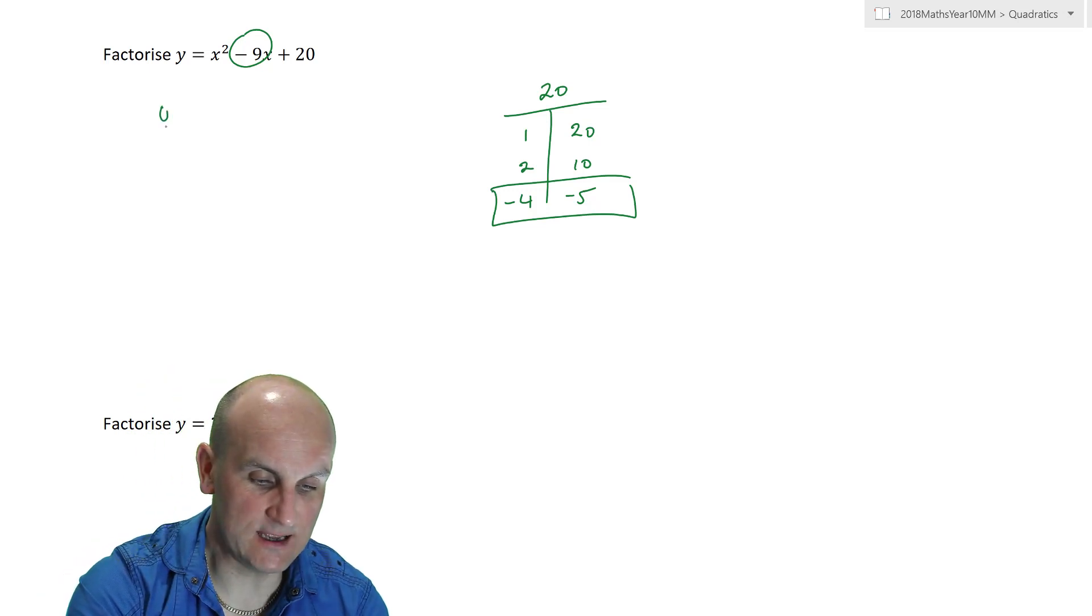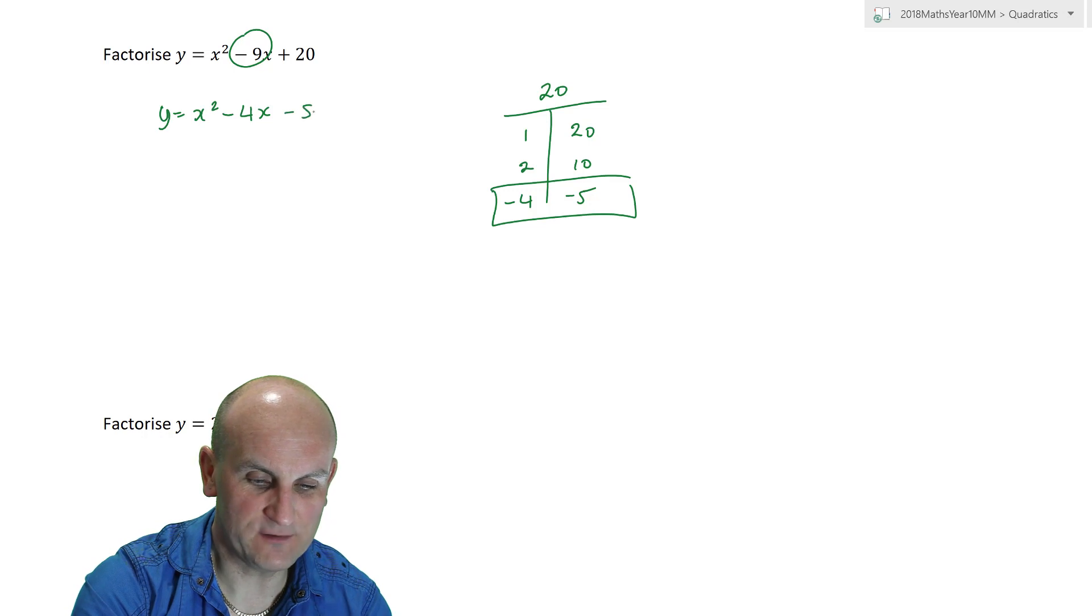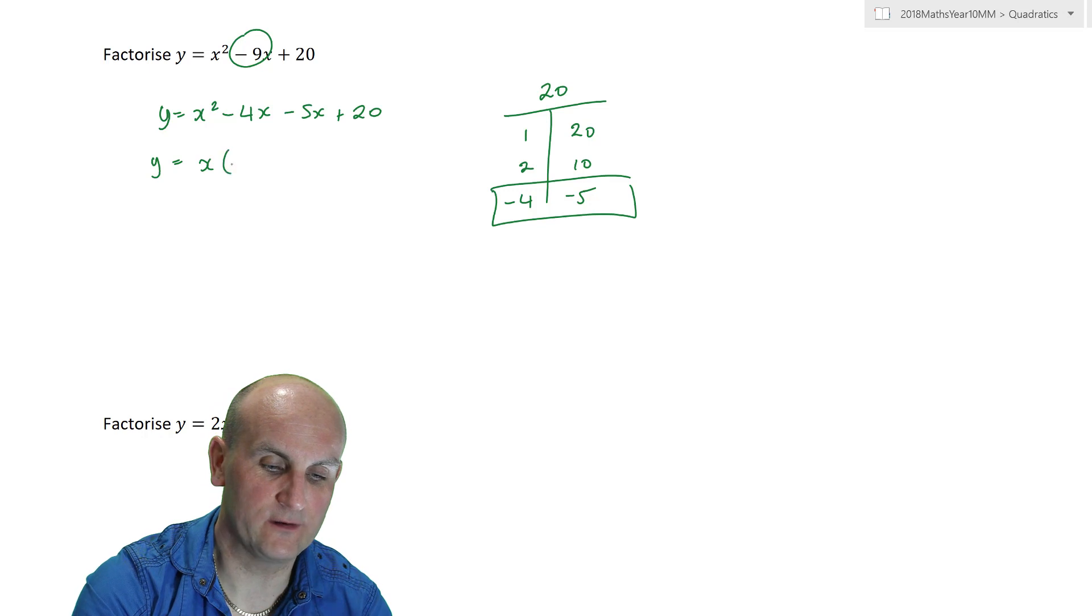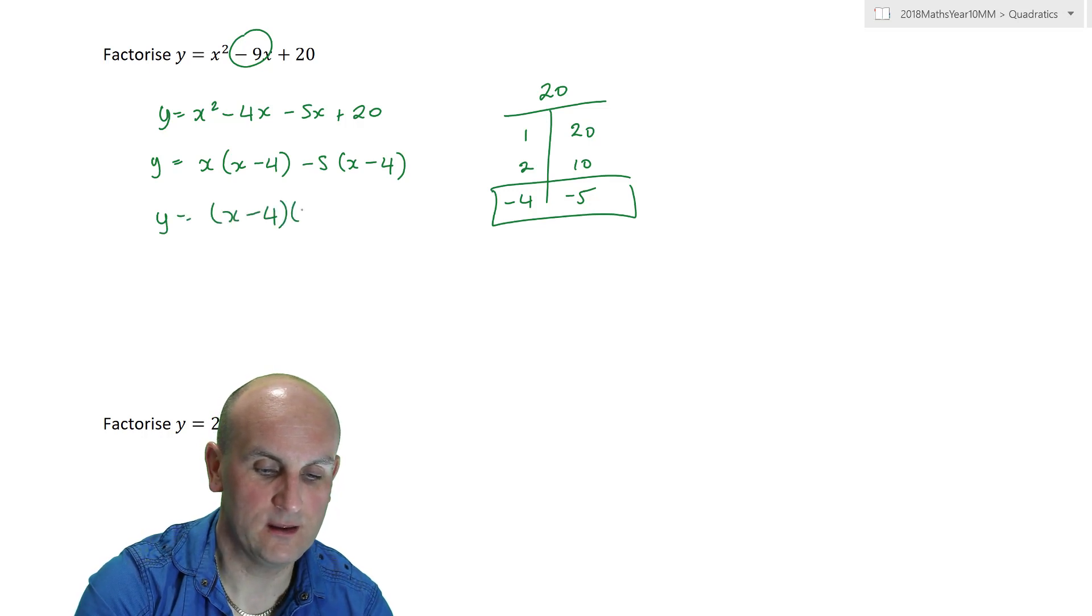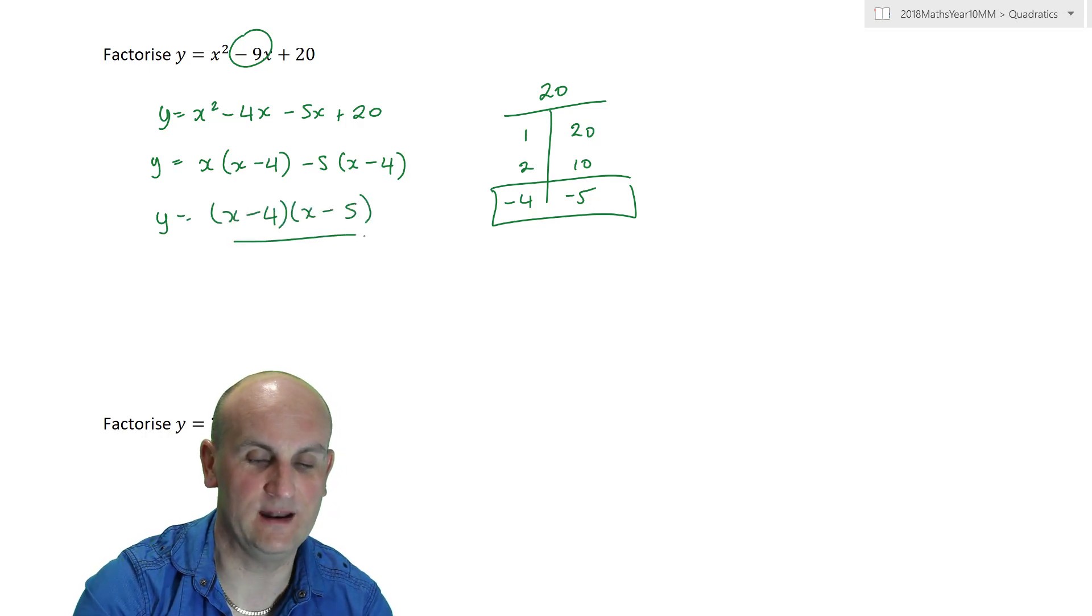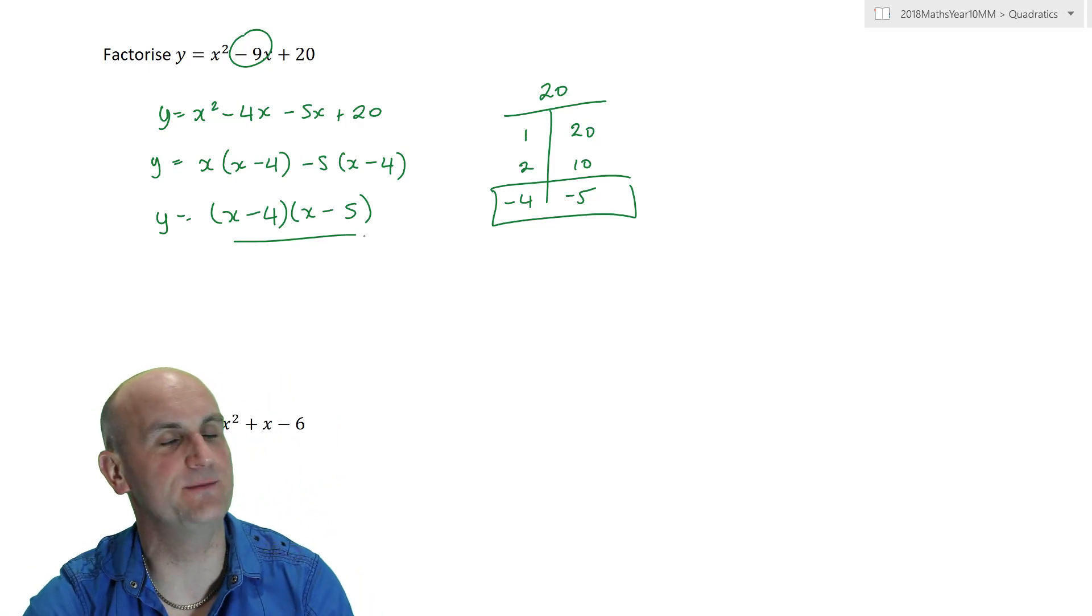So, first term stays the same. Y is equal to x squared. So, minus 4x minus 5x plus 20. And, we just do the grouping. So, x, x minus 4, minus 5, x minus 4. So, y comes to x minus 4 and x minus 5. Now, I don't know how sensitive my microphone is. But, if you can hear that barking in the back, that's my dog going mental.